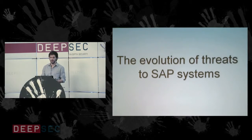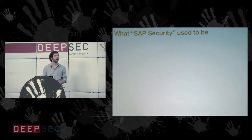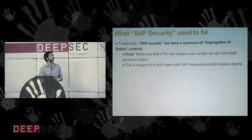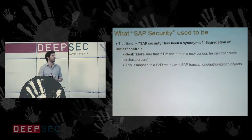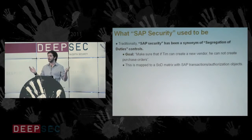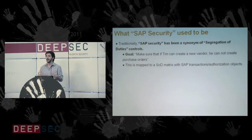How have threats to SAP systems been evolving? I did one of my first presentations on SAP security at DeepSec in 2007. Back then it was hard to challenge what SAP security actually meant. The main problem is that SAP security has traditionally been regarded as synonymous with segregation-of-duties controls. Segregation of duties basically means: make sure that if a user can create a new vendor, he cannot create purchase orders to that vendor — otherwise he can commit fraud. This is mapped into a matrix — usually Excel sheets — which is translated in SAP to transaction or authorization objects.